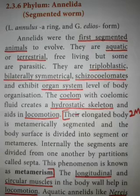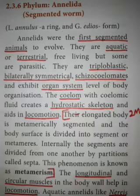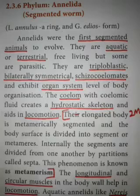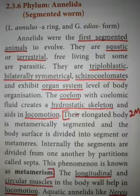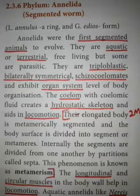Most of the organisms are free-living but some organisms are parasitic. They are triploblastic, meaning they have three germ layers: outer ectoderm, inner endoderm, and in between them, the mesoderm. They are bilaterally symmetrical — they can be divided into two equal halves along the central plane.